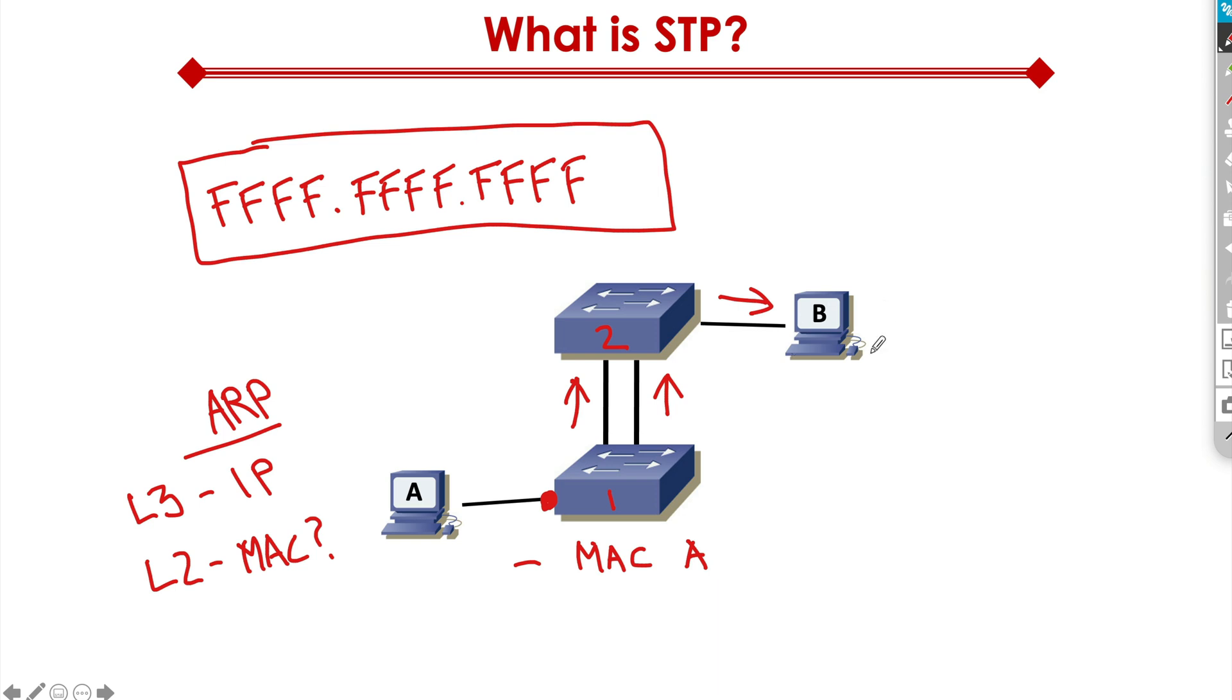Now when host B gets that frame, it's going to respond back with its MAC address, because when it looks at the layer 3 destination IP field, that IP address will match its own IP. So it responds back to host A with its MAC address. When it does, switch 2 learns that MAC address and puts it in its CAM table or content addressable memory table.